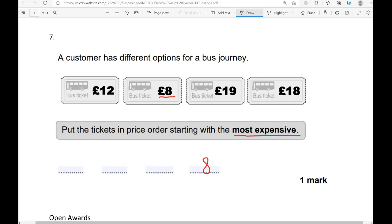Now if you continue counting, 8, 9, 10, 11, 12 comes next, 13, 14, 15, 16, 17, 18, 19. So 19 is the most expensive, then we have 18, 12, and 8.